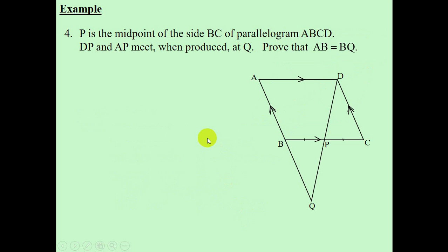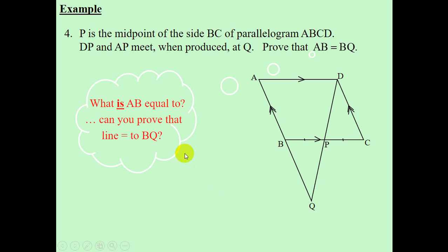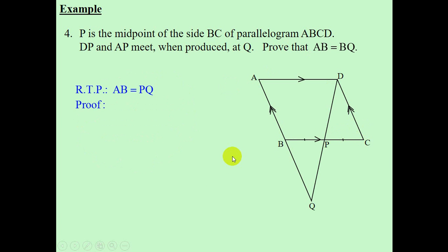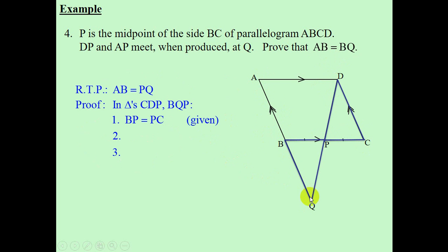Example 4. The question is to prove that AB is equal to BQ. We are given a parallelogram with an extension — line AB is extended to Q, and DP is extended to Q. We are looking at two sides. The question to ask ourselves is: what is AB equal to? We definitely know that AB is equal to DC because they are opposite sides of a parallelogram. So we are going to try and prove that BQ is equal to DC.